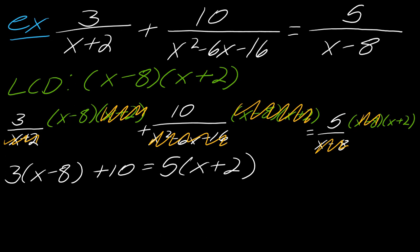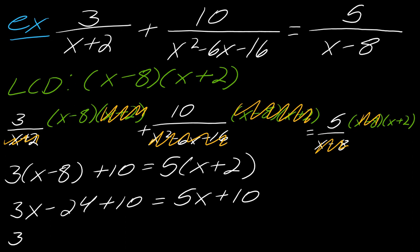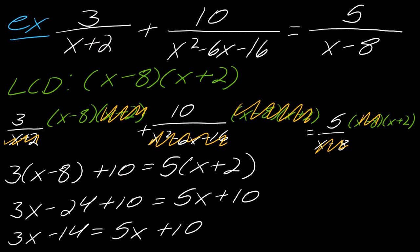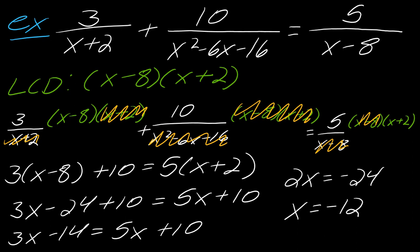From here it's just smooth sailing — finish this as a regular algebra equation. Distributing everything gives me 3x − 14 = 5x + 10. I subtract the 10 over to this side and 3x over to the other, leaving 2x = −24, so x equals negative 12. Now we check: does x = −12 create a zero in the denominator? No — negative 12 minus 8 is not 0, and negative 12 plus 2 is not 0. It's totally fine if the denominator is negative; it just can't be 0. So x = −12 is our solution.